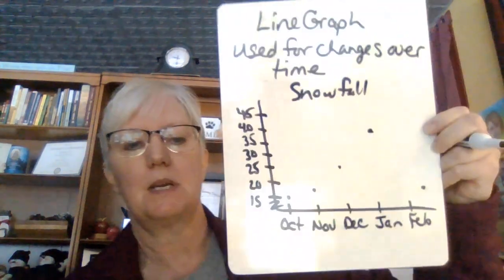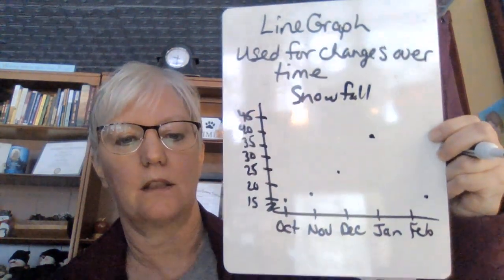Now I'm going to put a dot at where the snowfall was in each month. In October there was only 15 inches. In November there was about 18. In December we had a lot of snow — 25. January was super snowy, and then in February there was barely anything. You put dots at the frequency of how much it was, and then all you do is connect them. That's it — super simple.